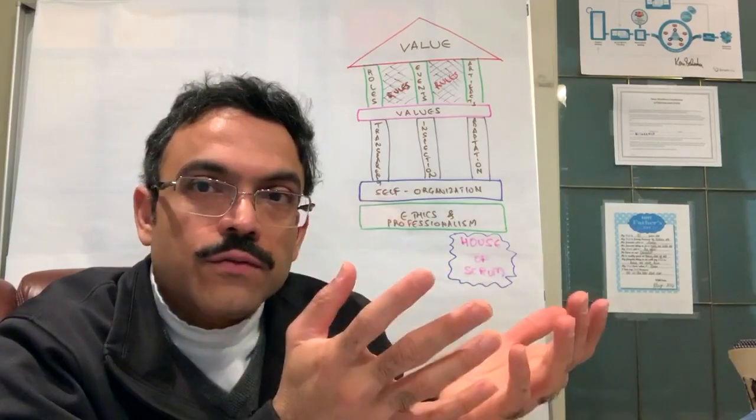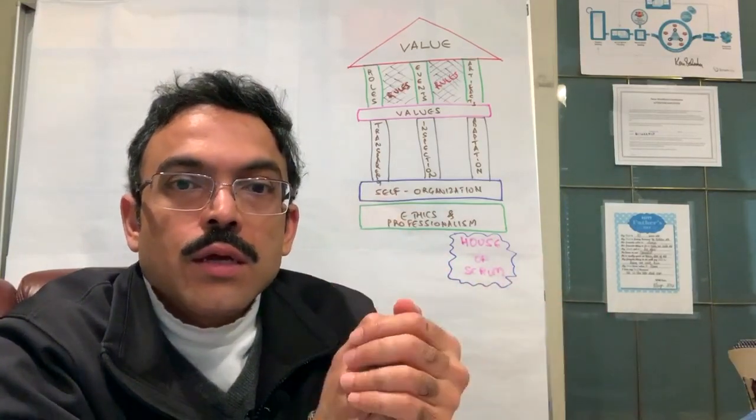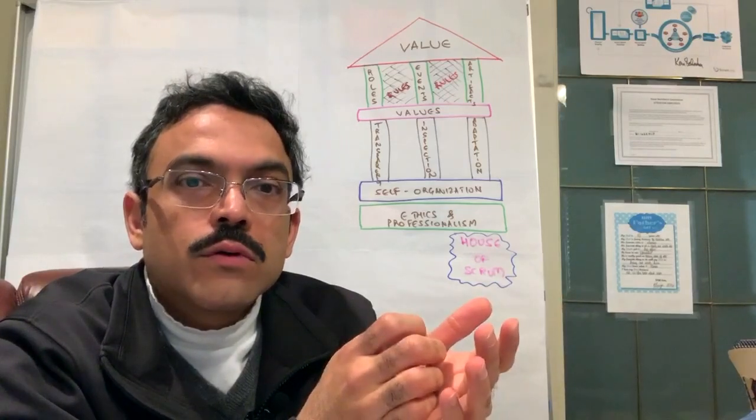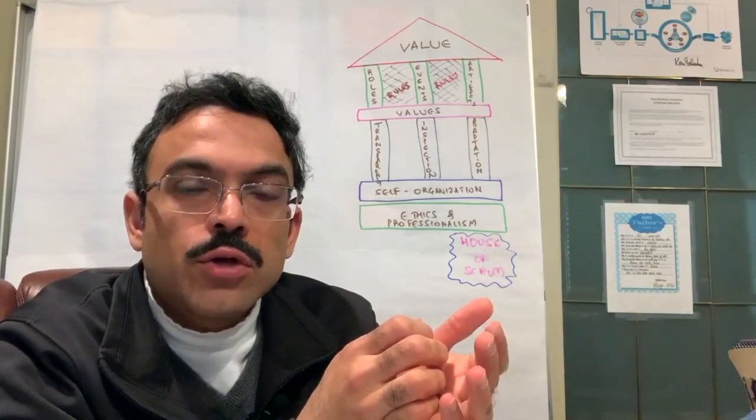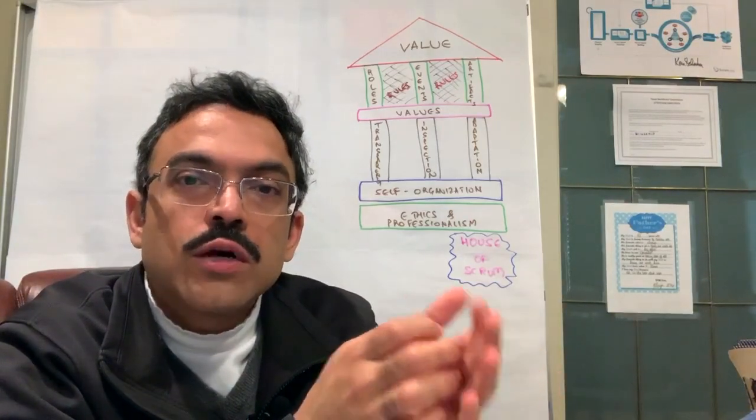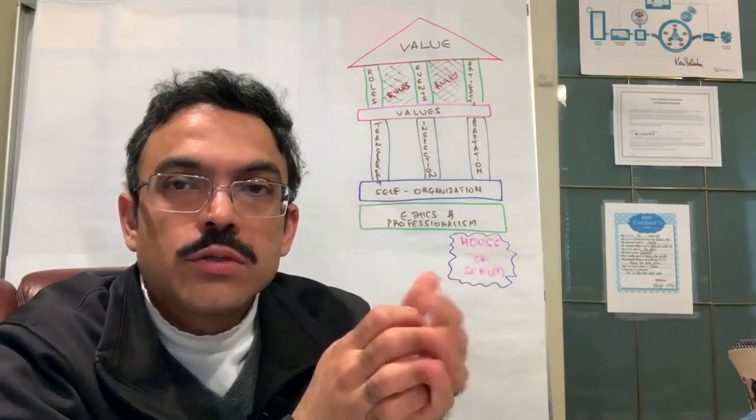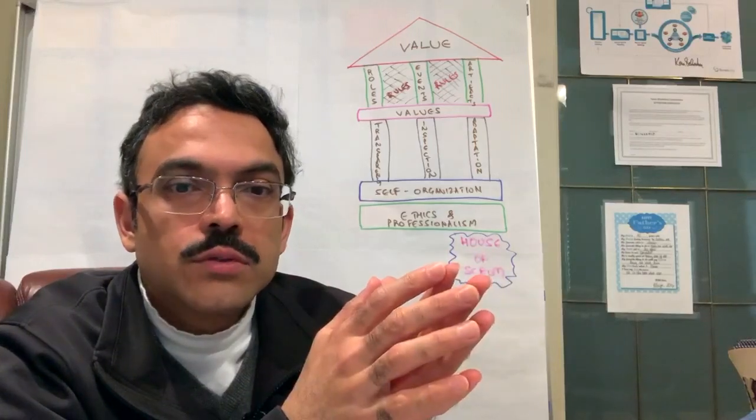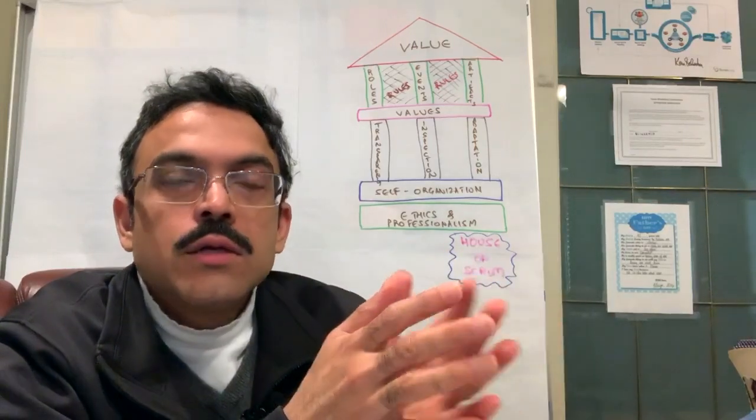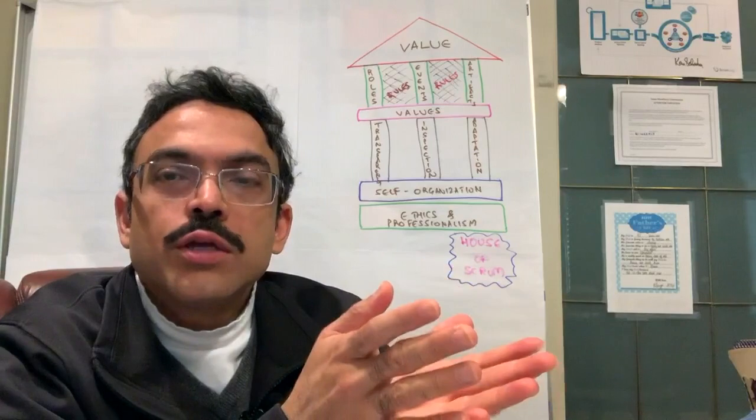In that environment of transparency, it's very hard for developers who are not exhibiting the Scrum values, who are behaving in a way that is not aligned with the team's goals. It's very hard for developers to hide and to escape the scrutiny of their peers.